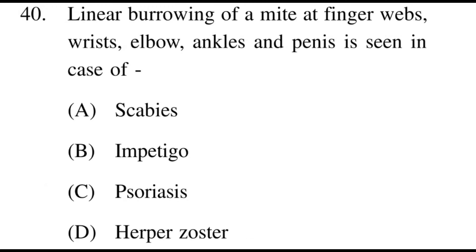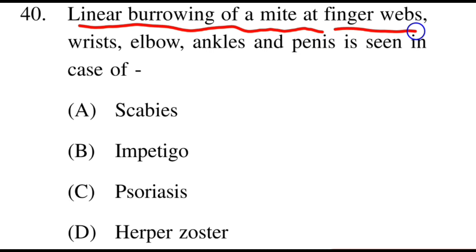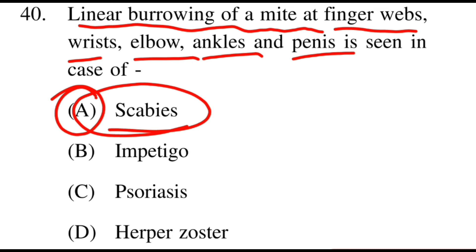Next question: Linear burrowing of a mite at finger webs, wrist, elbow, ankle, and penis is seen in case of? Options: A: scabies, B: impetigo, C: psoriasis. The right option is A, scabies. Linear burrowing of a mite is seen in scabies.